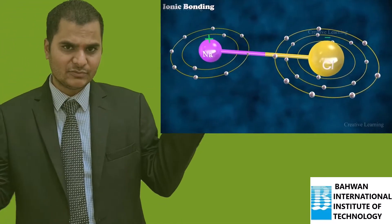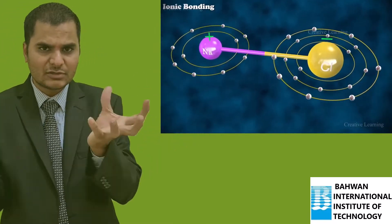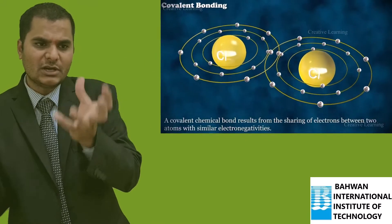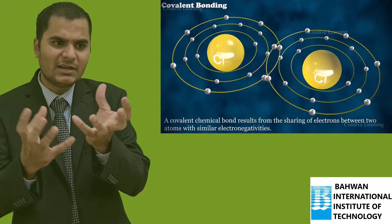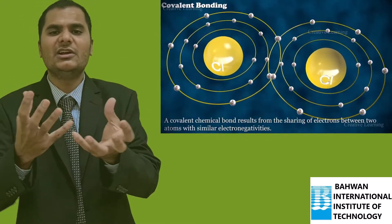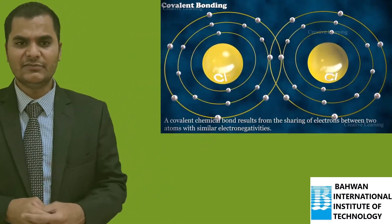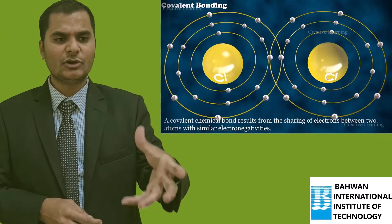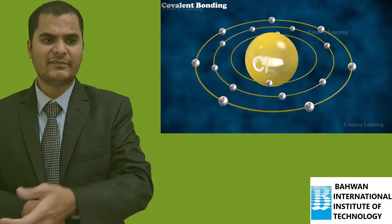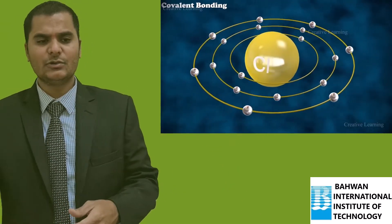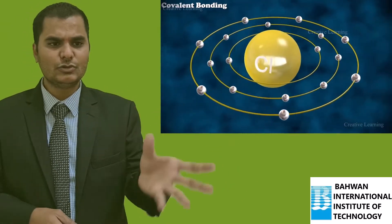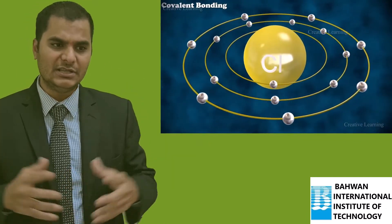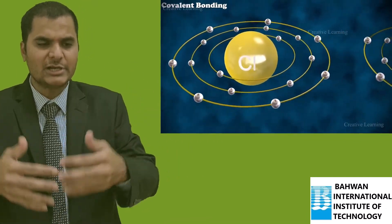When two chlorine atoms come close, both need one bond electron, so they are both contributing one bond electron and sharing of electrons takes place. Let us see — first chlorine has electronic configuration 2, 8, 7; another chlorine also has 2, 8, 7. Both need one electron each.